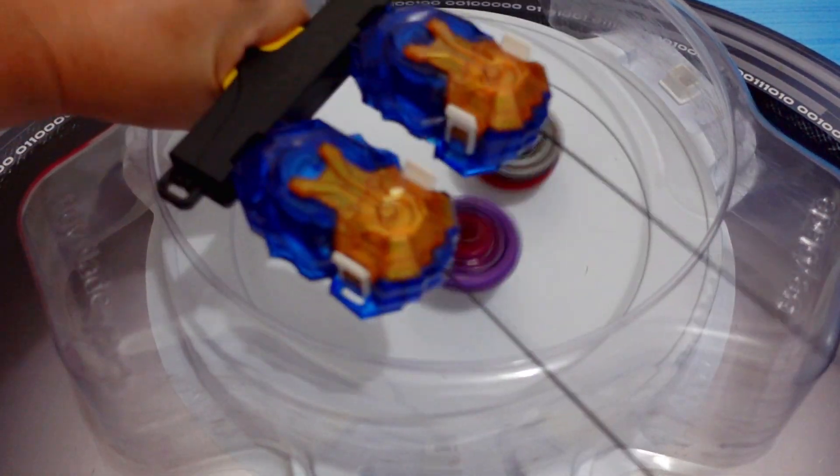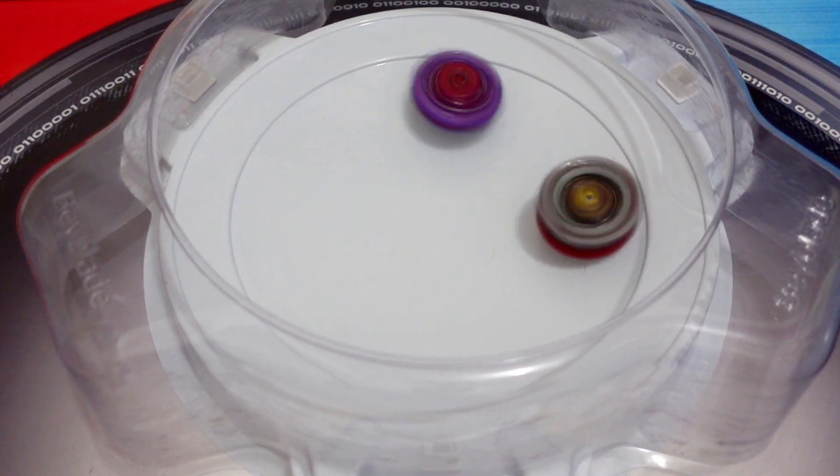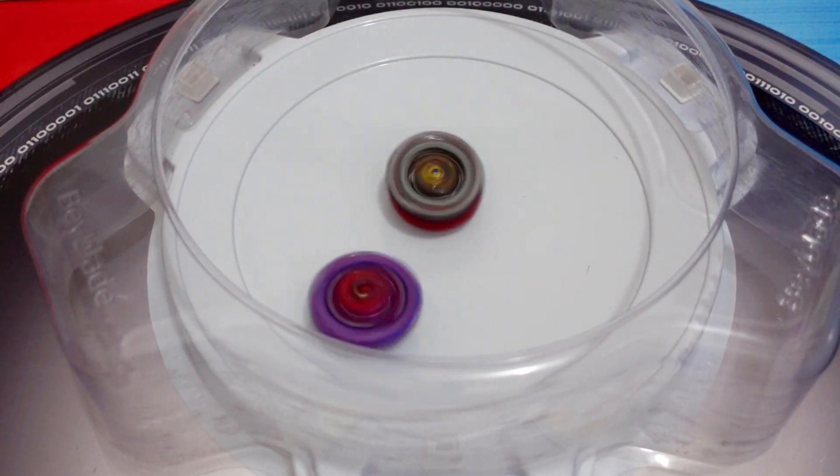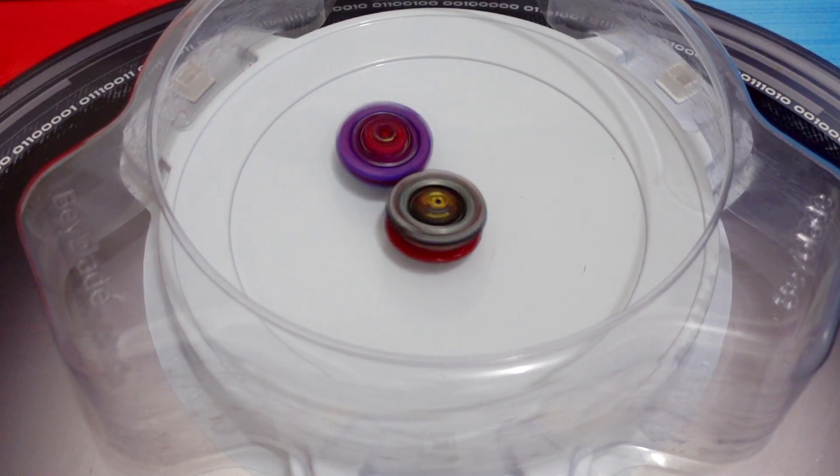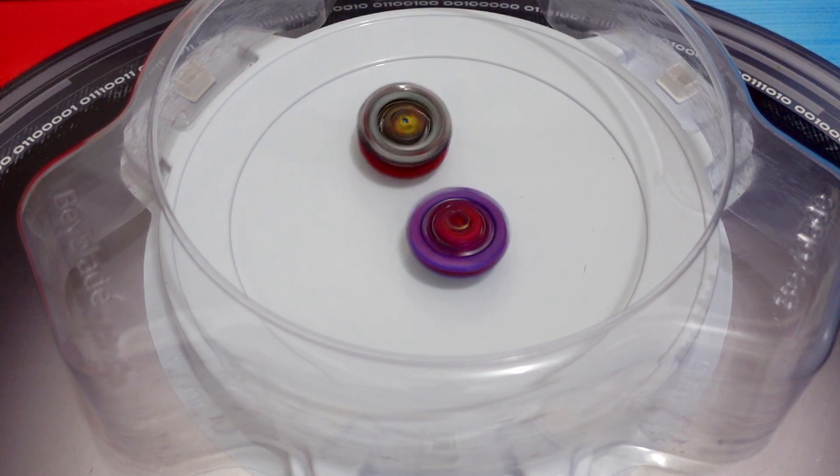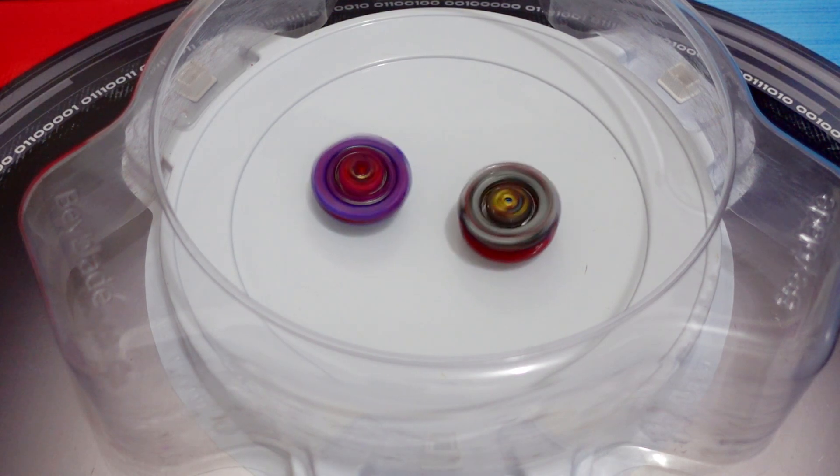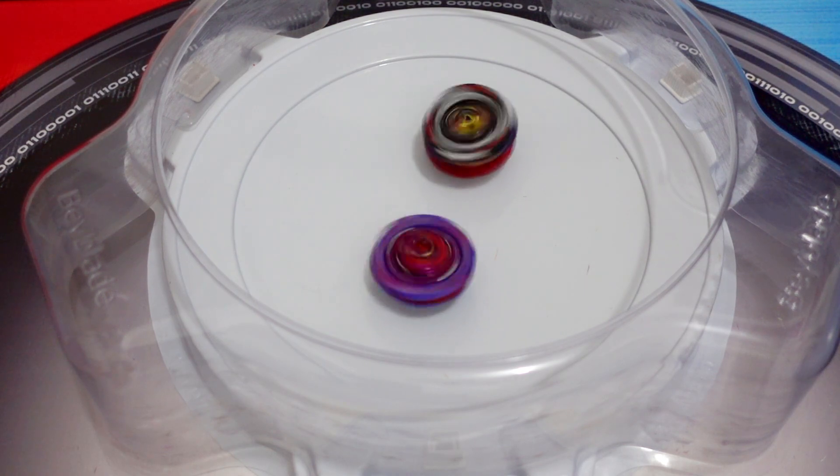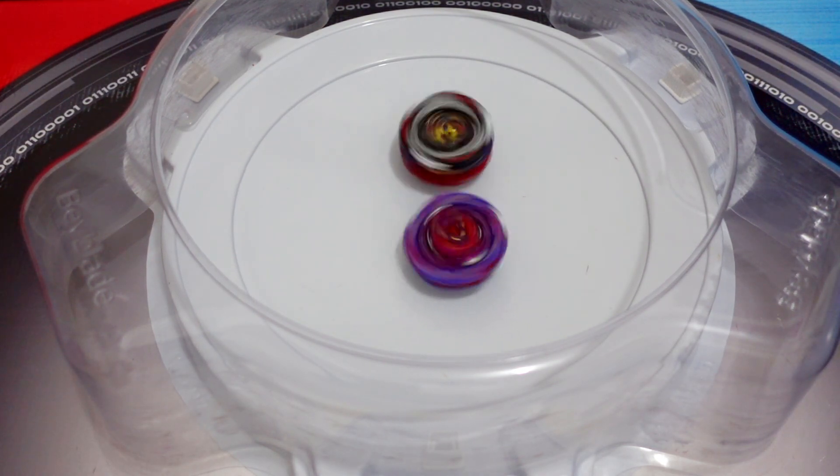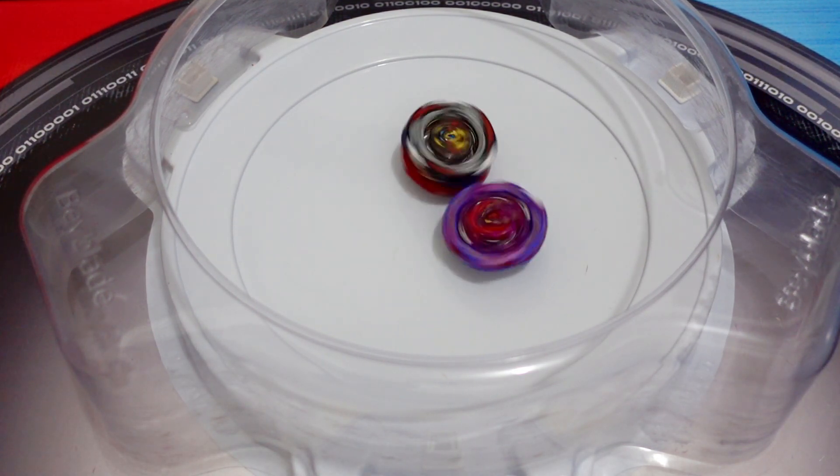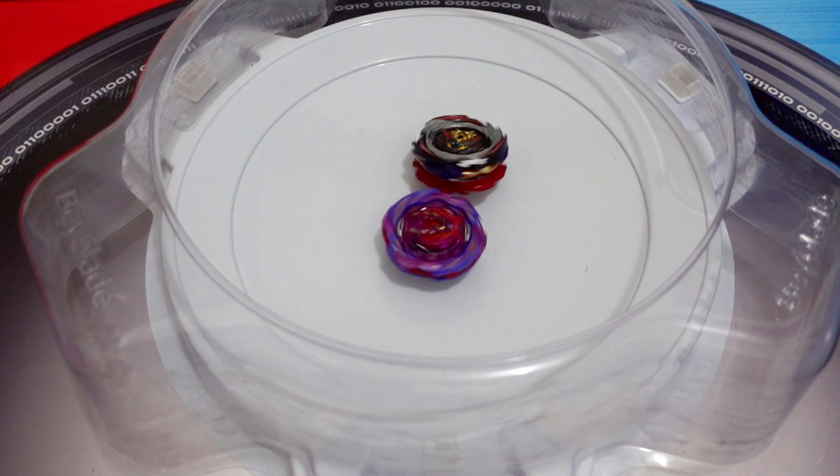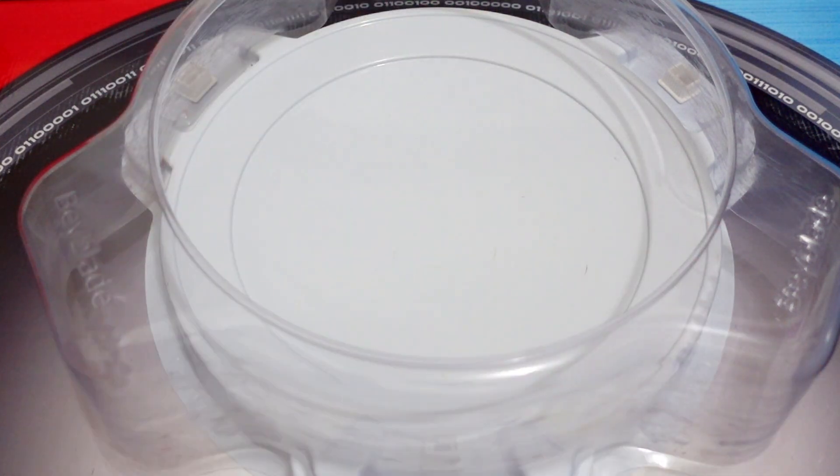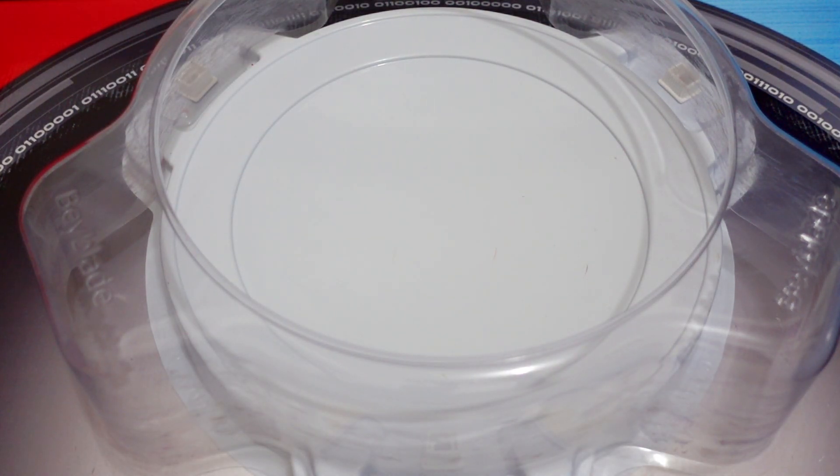Ready? 3-2-1, go. Nice hits. Roar Bamut from the B-190 all-in-one set versus Perfect Belial. This is Dynamite Belial with the F, S, V, and L gear. Okay. Oh wow, the LAD of this one is really good. Winner is Roar Bamut.